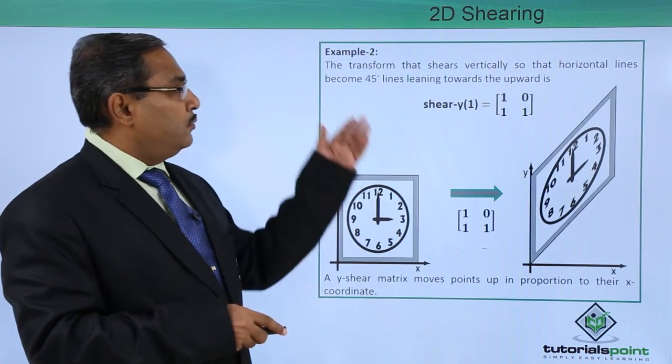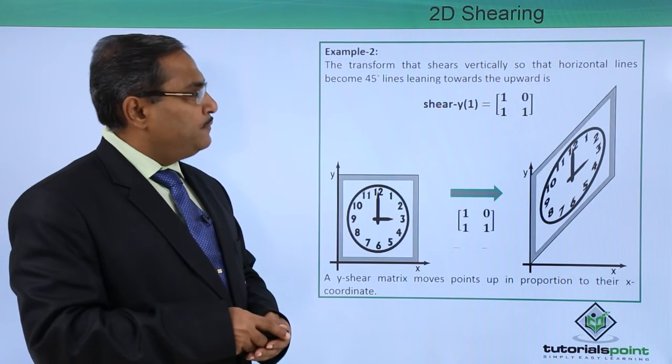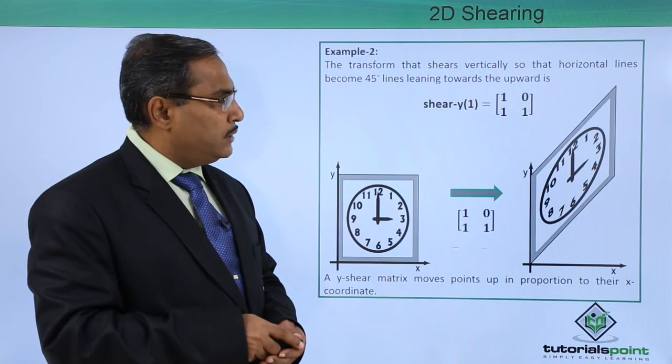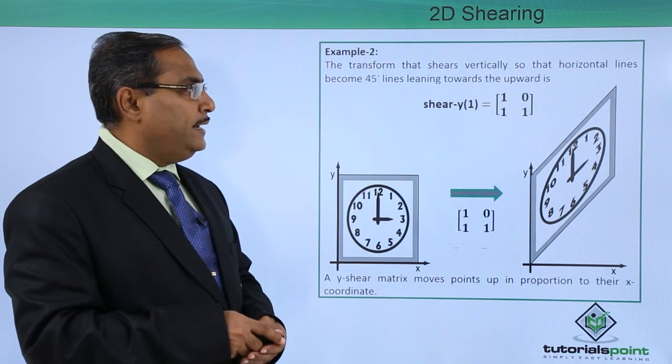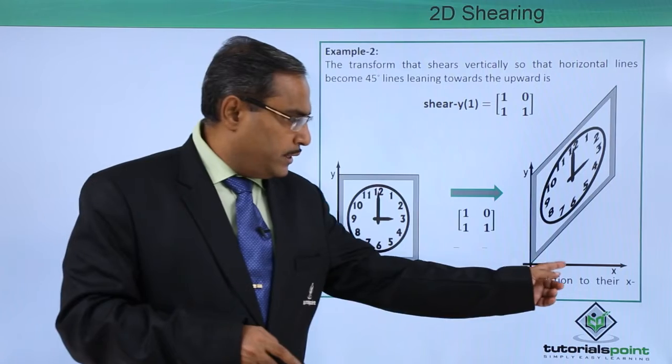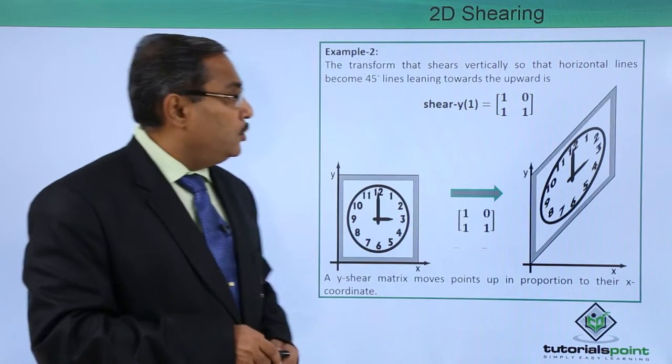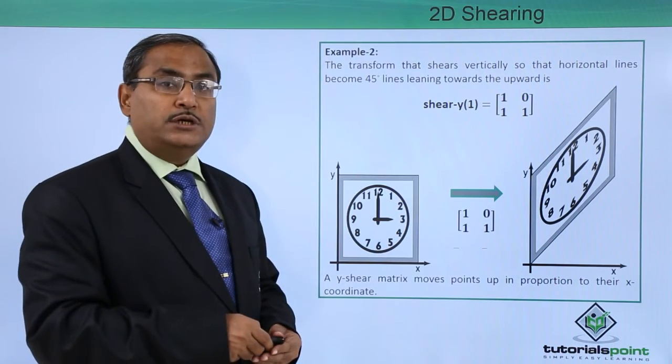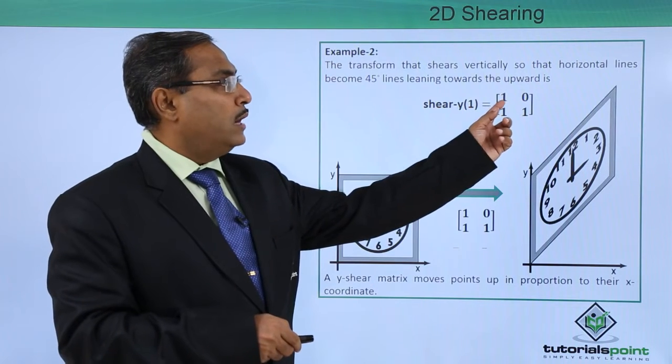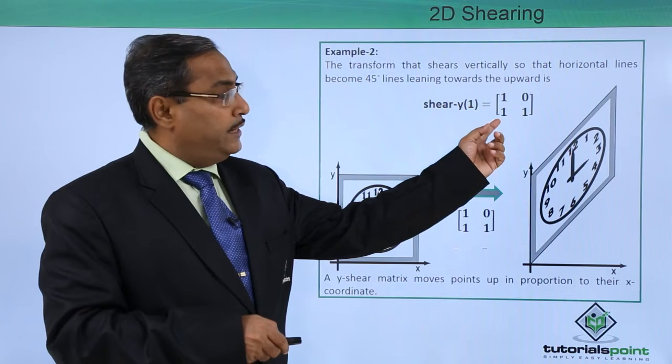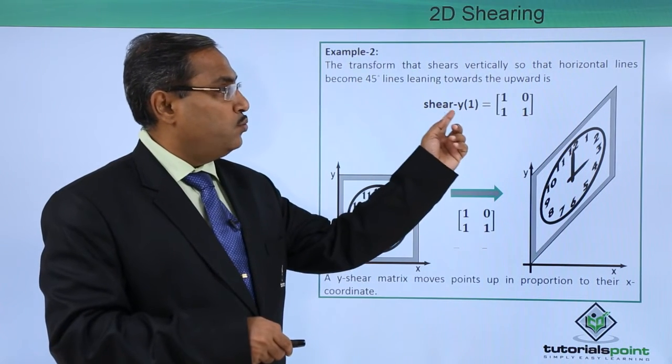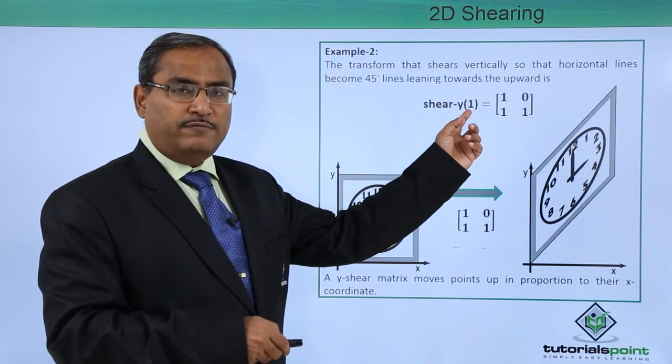Now if we consider this example number 2, the transform that shears vertically so that the horizontal lines become 45 degree lines leaning towards the upward. Here this angle is 45 degree. That is our y-shear we require here. Here this expression will be 1, 0, 1 and here it is tan of 45 degree, that is 1 here. Shear_y(1), phi 1 is tan of 45 degree.